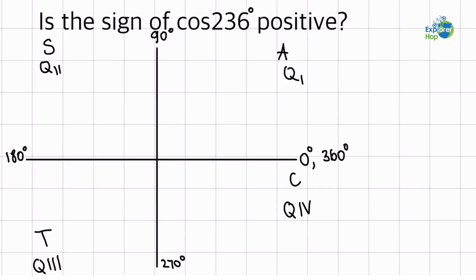So let's find out where this angle is on this graph. So 236 degrees would be around here, between 180 and 270 degrees.